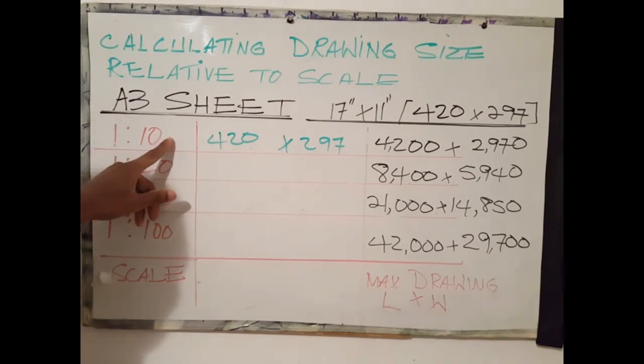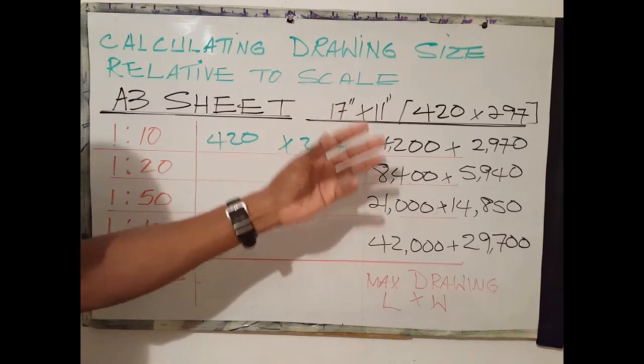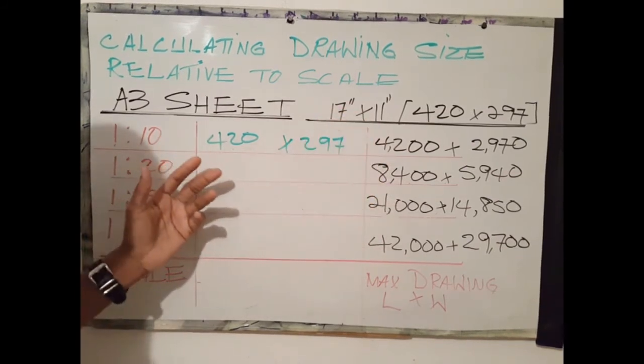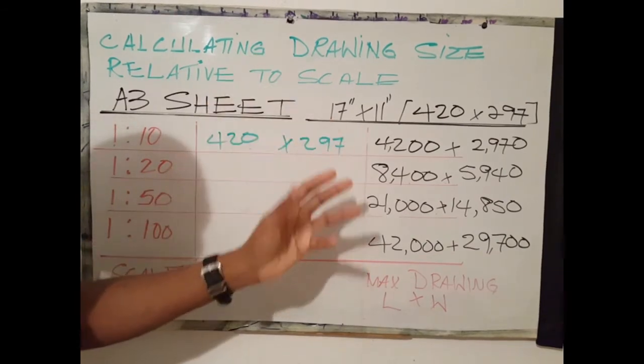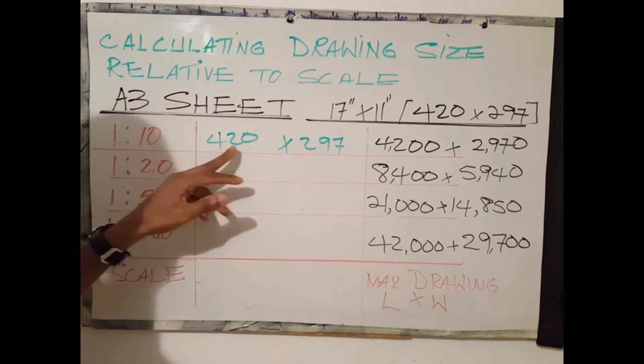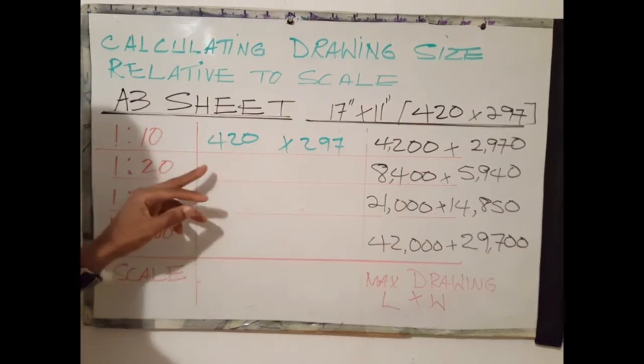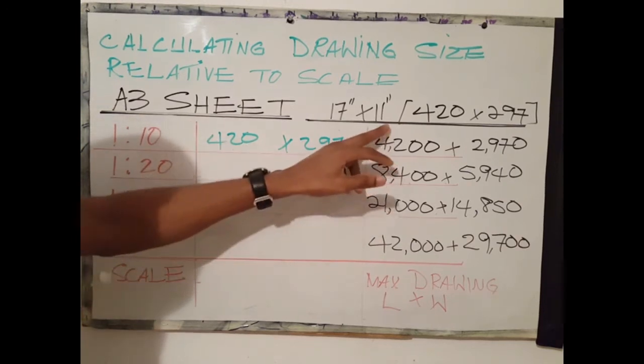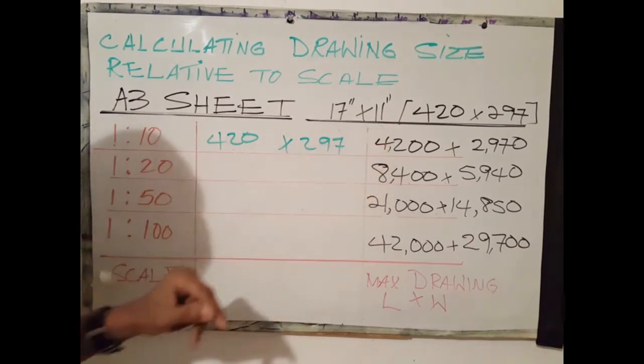A 1 to 10 scale means that the drawing is reduced by 1 to 10 of the original size. In order to determine the size of the drawing, we must multiply the scale factor by the dimensions. In this case, 420 multiplied by 10 gives us 4200 millimeters.